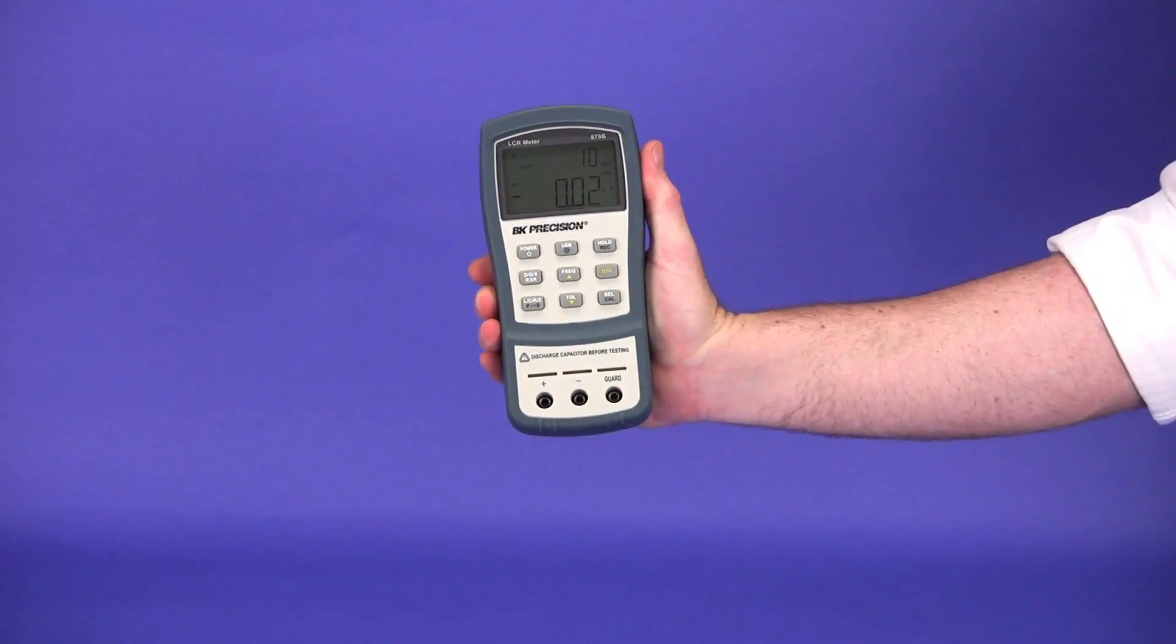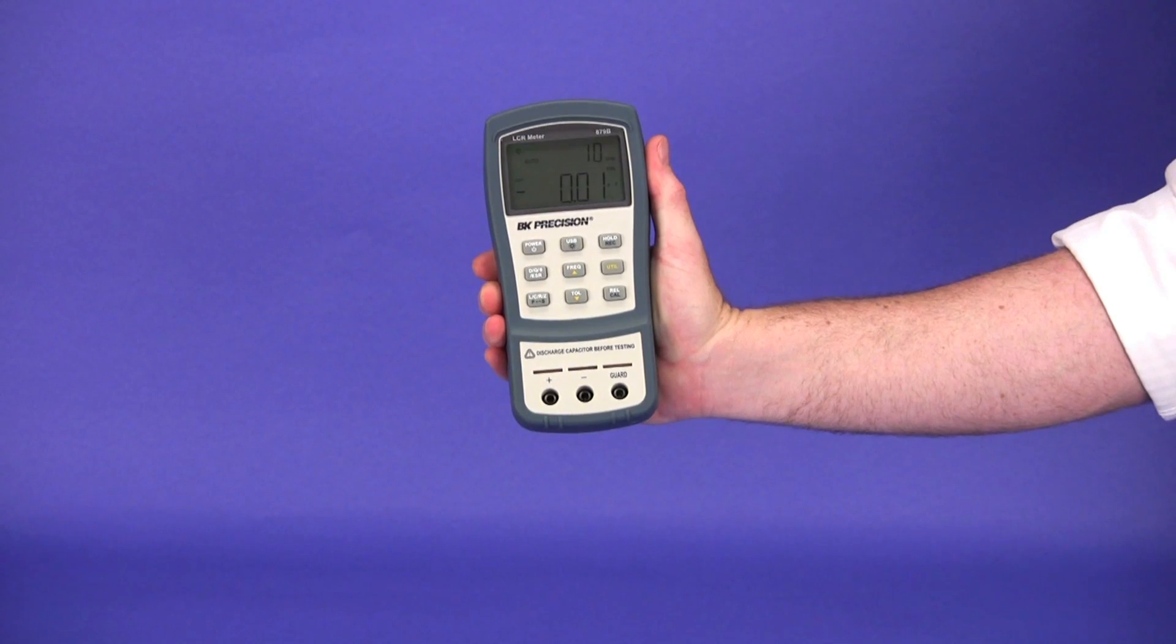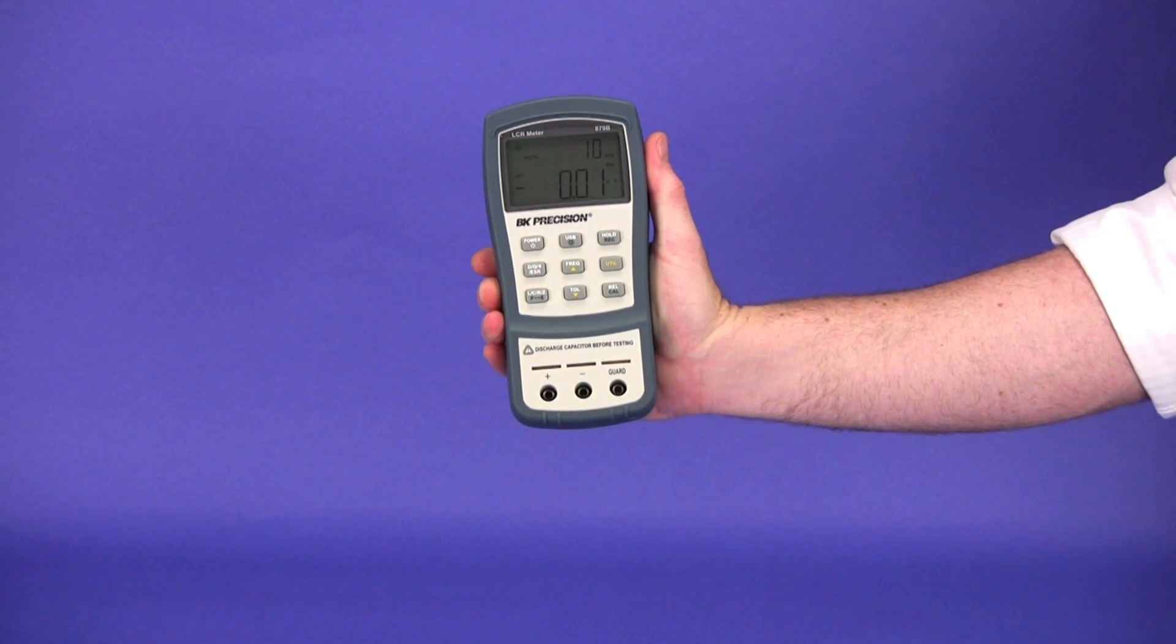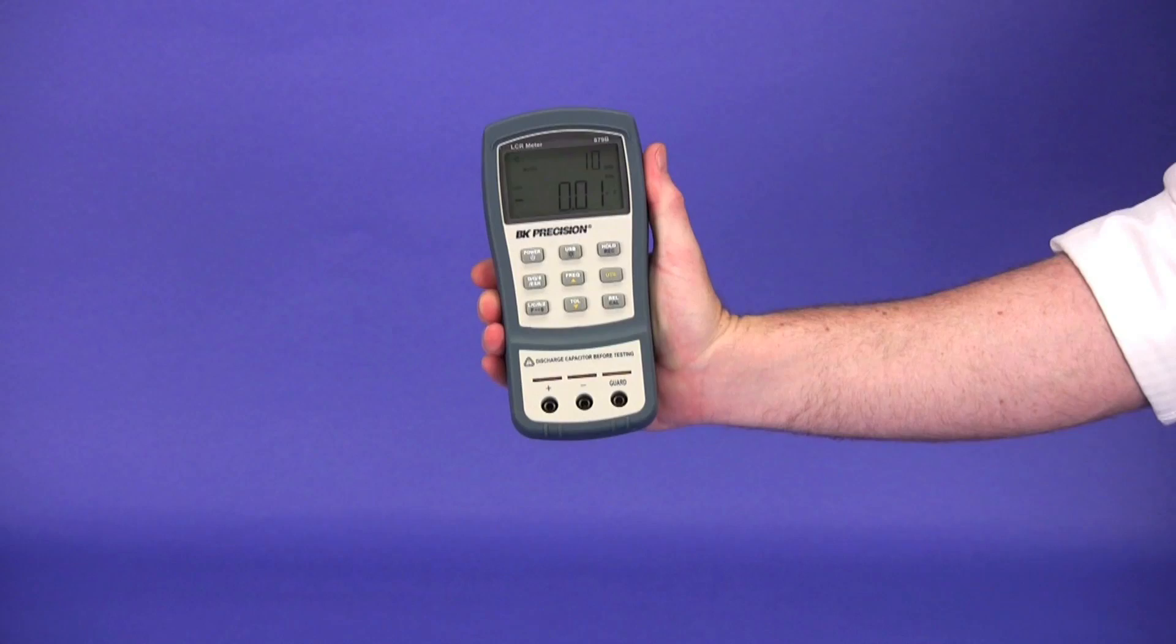The form factor of these meters was designed to fit comfortably in your hand. The tapered sides help to prevent the meter from slipping out of your hand and also allow for a larger screen size.